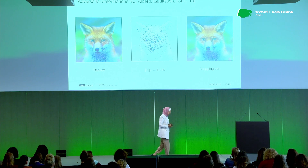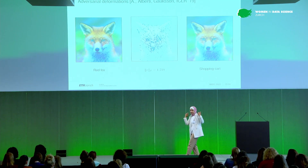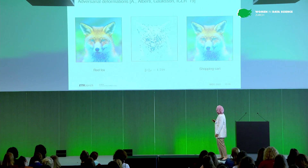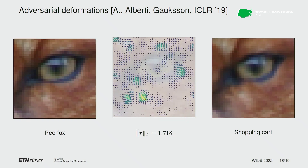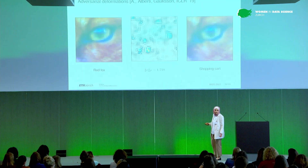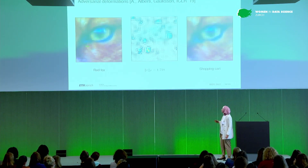Here is an example again — what I showed you at the beginning. Now you can see what's happening: I deformed my image with this vector field, and now the algorithm thinks it's a shopping cart, not a red fox anymore. Here's a close-up. And of course, if I have a fixed budget, what the algorithm will not do is move very similar pixel values around. So if I'm in an area where nothing's happening, it will not try to move around pixel values — this is really a waste of the budget. So it will really do a lot around edges.